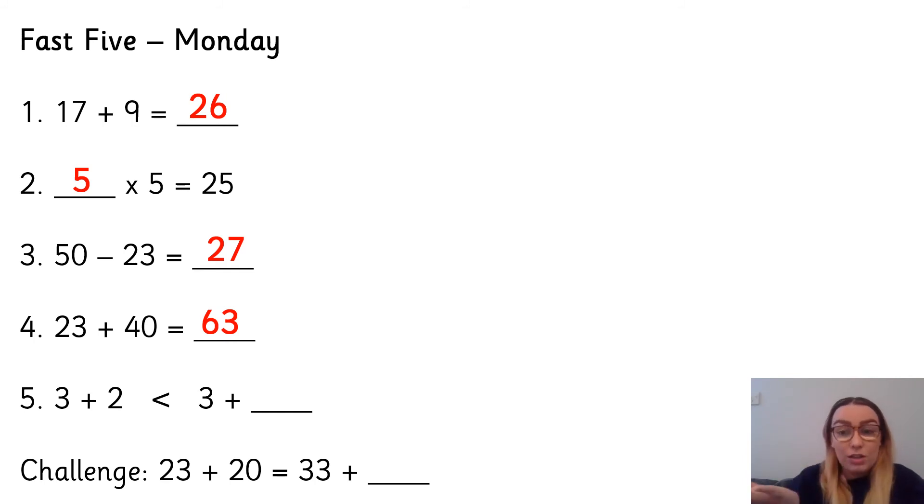Right, number five. This one, you could have had lots of different answers. You could have had many different numbers. So if there is an adult nearby, hopefully they can help you check whether or not you've got this right, or you might just be able to work it out yourself. So 3 add 2 is less than 3 add what? Now, I know that 3 add 2 is 5. So I need to find something that is going to add to 3 to make more than 5. Because it says 3 add 2 is less than what's on our other side. So you could have had 3 or 4 or 5 or 6 or 100 or 1,000, as long as it was 3 or more. So a number that is bigger than 2, basically.